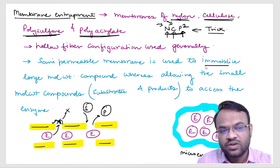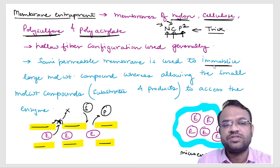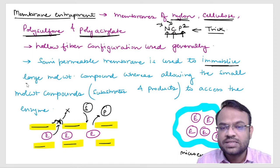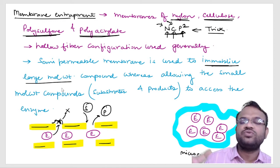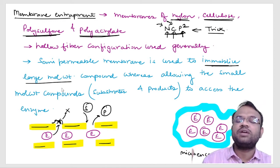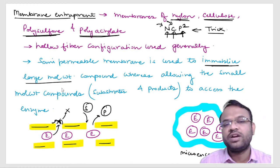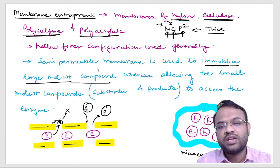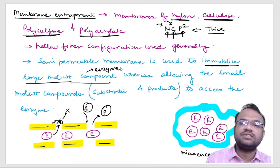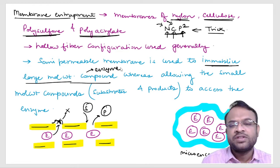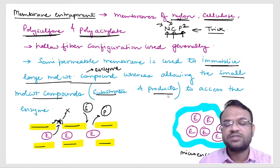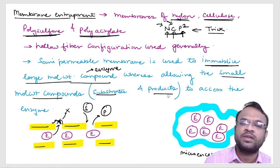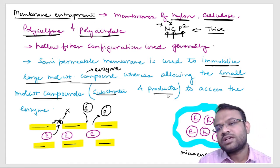A semi-permeable membrane is used to immobilize large molecular weight compounds — meaning the enzymes. Small molecular weight compounds like substrates and products can move in and out freely, but the large enzyme molecules are retained inside.